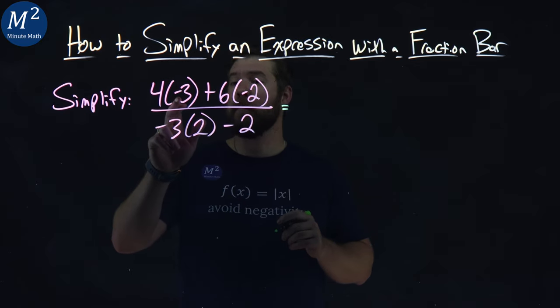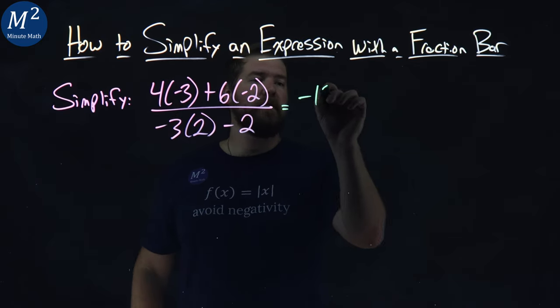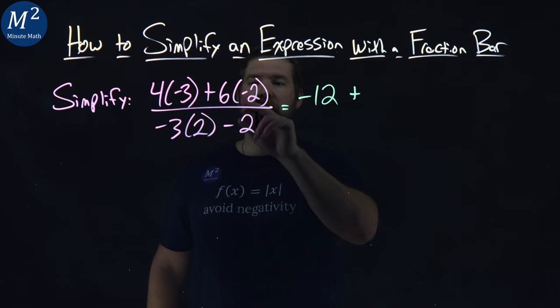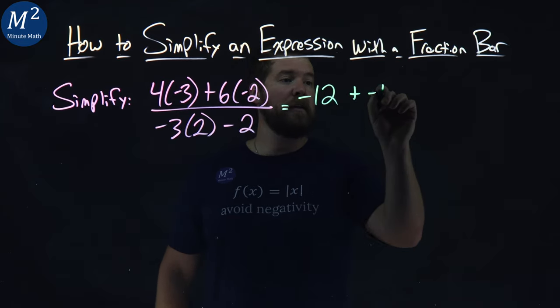4 times negative 3 comes first here, multiplication, and we get negative 12 plus 6 times negative 2 is negative 12 as well.